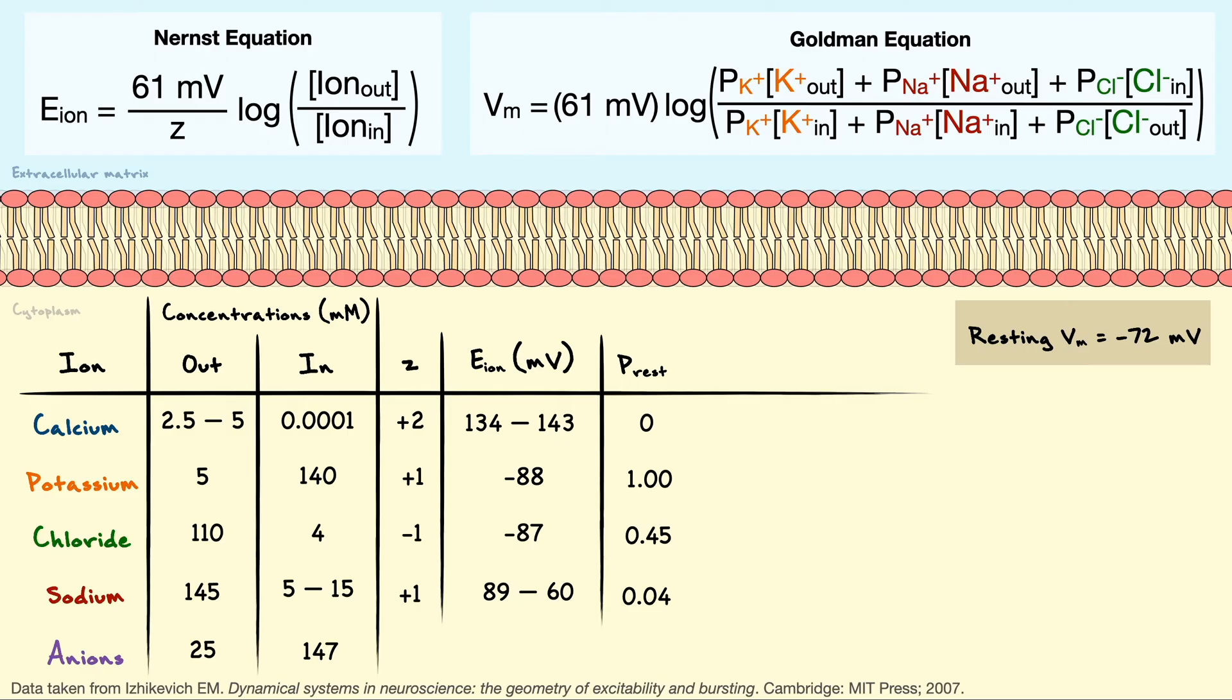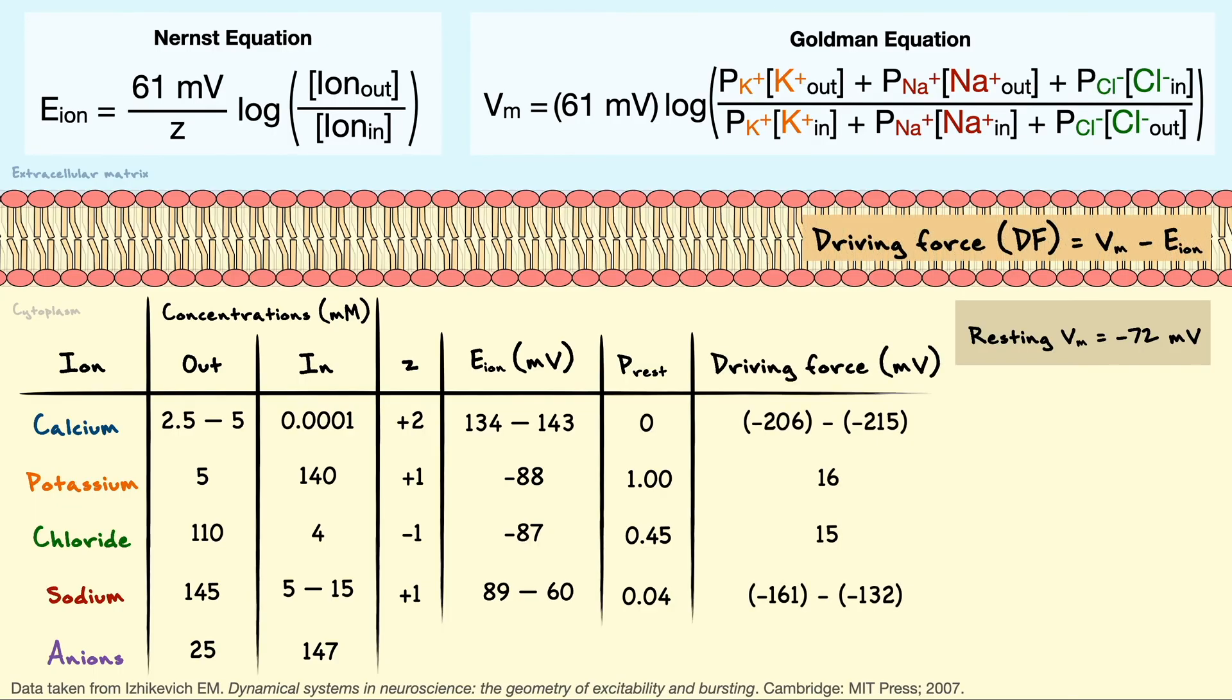Now that we have the membrane potential, we can establish a new quantity known as the driving force. This quantity is obtained by taking the difference from the resting membrane potential and the equilibrium potential of the ion. The driving force is essentially a measure of how much the ion wants to move in or out of the membrane. As you can see, potassium at rest has a very low driving force compared to sodium, since the membrane potential is predominantly set by the permeability of potassium. Keep the driving force in mind because this property will be very important for us in our future discussions.